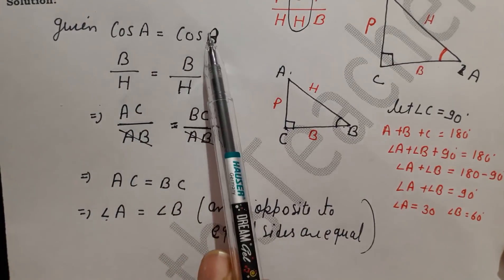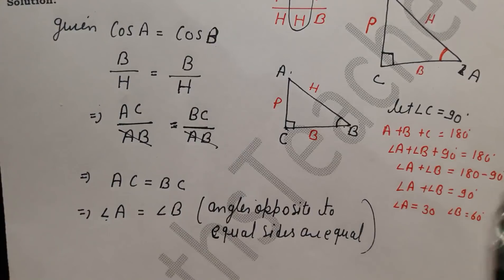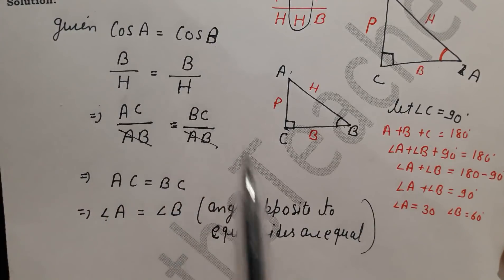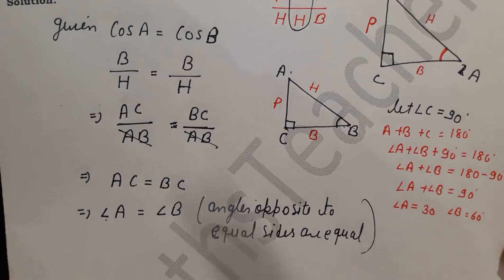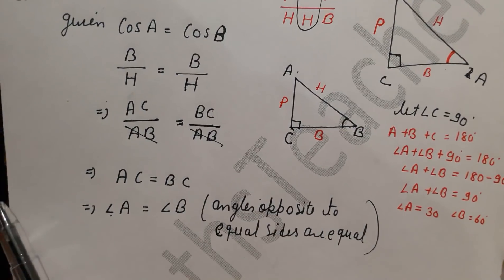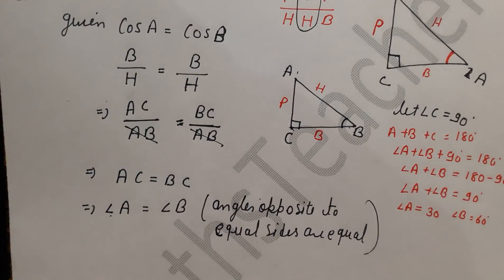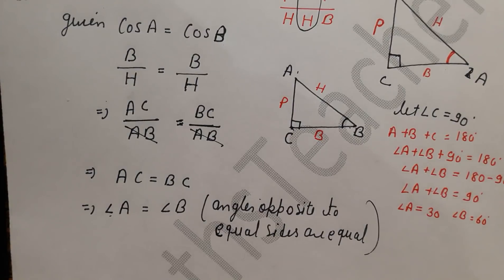I hope you understood this question. In trigonometry, always remember that whatever angle ratio you write, that angle should be at the base, or you have to orient the triangle accordingly. If you understood this question, please like, subscribe, and comment. Don't forget to press the bell icon. Thank you.